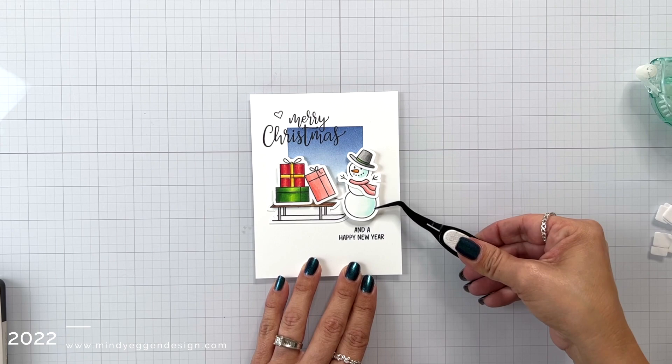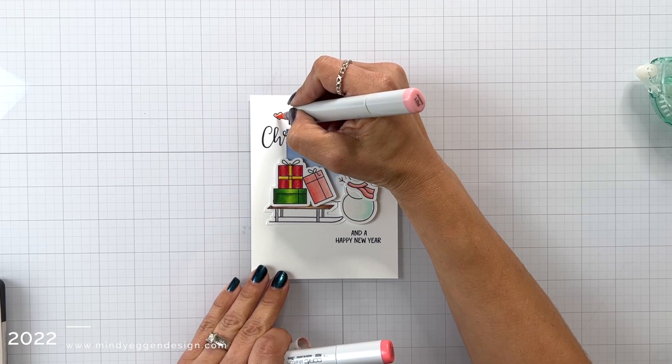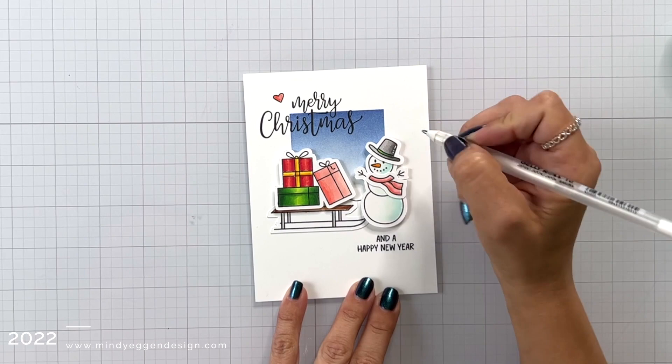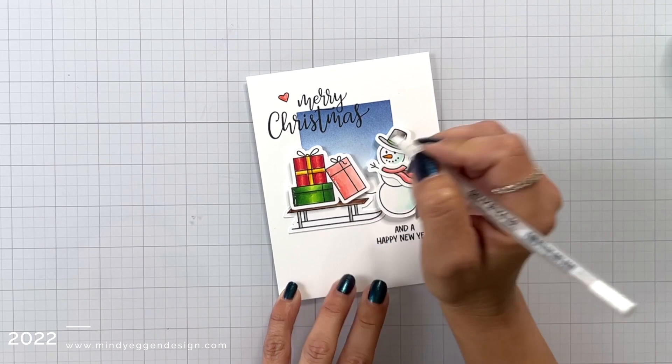I had also stamped that little heart up by the sentiment, so I'm going to grab some of my Copic markers that I used on the presents, which is just a really light pink, and I'm going to fill that in. I also wanted to add a few highlights to my presents and some of the parts of the snowman, and to do that, I'm just going to bring in a white jelly roll pen.